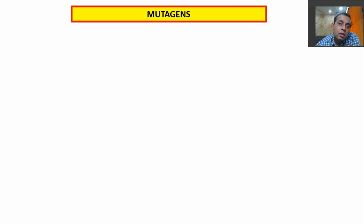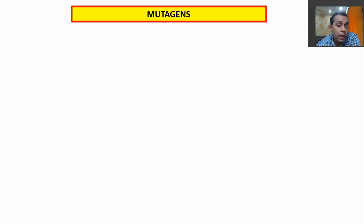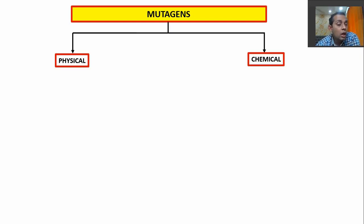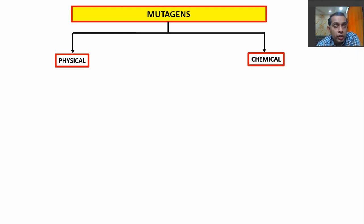Let's understand the agents who cause these mutations. Agents who cause mutations are called mutagens. Mutagens can be of different types, such as physical mutagens and chemical mutagens.